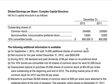In this problem we're going to go over diluted earnings per share for a complex capital structure. Hill Inc's capital structure is as follows: by end of 2011 they had 220,000 outstanding shares of common stock, and by end of 2012 they had 294,000 shares of outstanding common stock, 12,000 shares of non-convertible non-cumulative preferred stock, and $800,000 worth of ten percent convertible bonds.